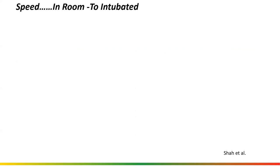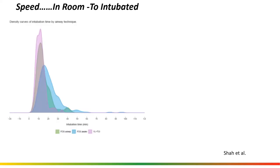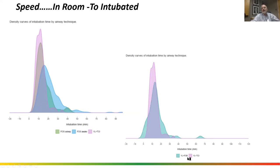The speed in the room is important because all of us work under the pressure of getting the patient intubated so surgery can start. The density curves show VL plus TCI is a really tight curve — meaning a very predictable time outcome. Surgeons don't much care if it takes 20 or 15 minutes to do something, but what they don't like is when you think it's going to take 15 minutes and it actually takes 30. That's one of the values combined technique can bring. This also opens up the era of self-rescue — when you start to struggle, if you have an immediately available device, you can just grab it and solve your problems.